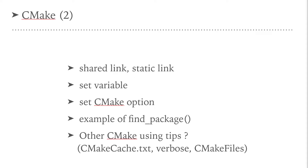This time we will discuss how to build your library with shared link or static link, how to set variables in CMake, and how to use the options provided by CMake. We will also give an example using find_package to integrate other projects, and provide tips like how to check the CMake cache and how to use the verbose command to check the parameters set by CMake and the contents in the CMake files folder.